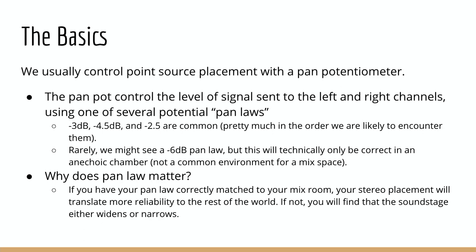If we were working with a pure signal that had no other interactions with any sound — as is happening in the voltage domain in our console — we would want it to be attenuated by six decibels when it's panned right in the middle. In practicality, in most real-world circumstances, we never get complete constructive interference between the sound coming from the left speaker and the right speaker. The room effect causes some amount of destructive interference. In a relatively untreated room, we might find that when we send the identical signal from both channels, we actually only measure maybe a 3.5 dB increase in the room, so maybe a -3.5 dB pan law would be ideal for that mixing situation.